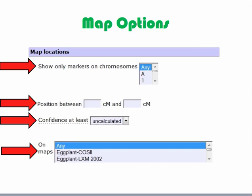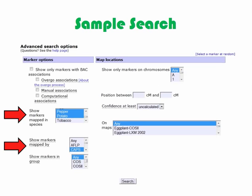Using the map location search options, we can limit our search to markers mapped to a specific chromosome, a range of map positions on a specific chromosome in centimorgan units, the confidence with which markers have been mapped, and markers localized to specific maps. When conducting these searches, we can specify as many search criteria as we wish. Any search criteria that we haven't specified will not be included in our search. As an example, we will search for CAPS markers that have been mapped in potato or pepper. This search will not take into consideration the BAC association criteria, marker group, or any of the map location criteria.